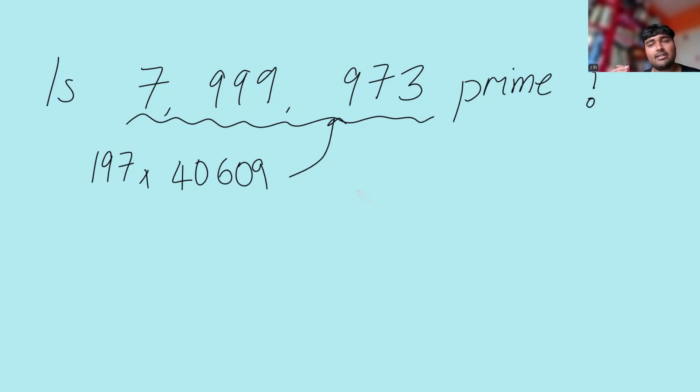The reason I say that is because currently the only ways we can prove that a number is prime is just testing all the numbers up to that number. So here, if I wanted to prove that this was prime, I would have to test all the numbers smaller than 7,999,973.